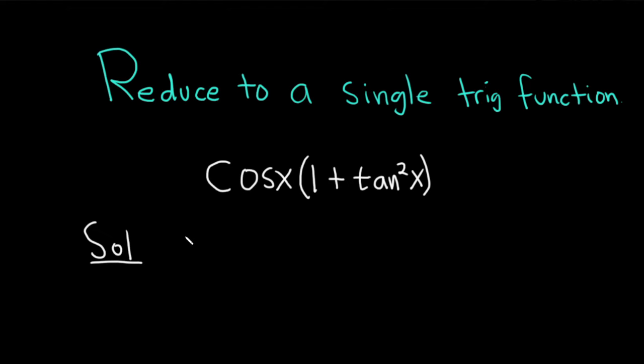So there are a couple of ways to do this. We can start right away by using an identity. If you know the identity for 1 plus tan squared, that's a good place to start. So let's go ahead and start with that.